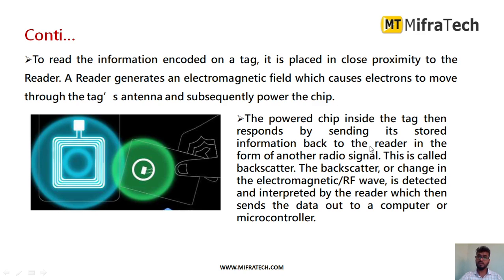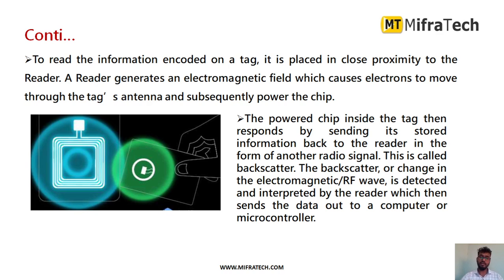The powered chip inside the tag responds by sending stored information. Whenever that stored information is read, it will send back the stored information in the tag back to the reader. In this way, the reader can read whatever information is stored in that RFID tag. Whatever stored information is sent back in the form of a radio signal, we call it a backscatter. The backscatter, or a change in the electromagnetic field, is detected and interpreted by the reader, which is then sent as data out to a computer or a microcontroller.